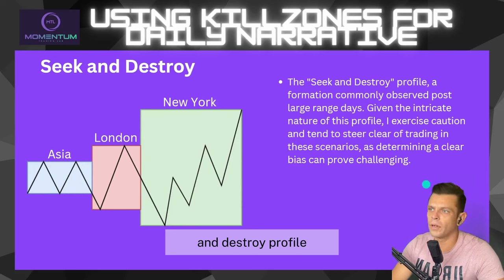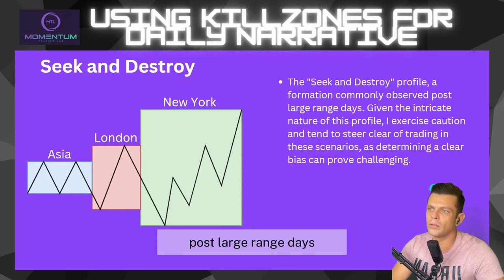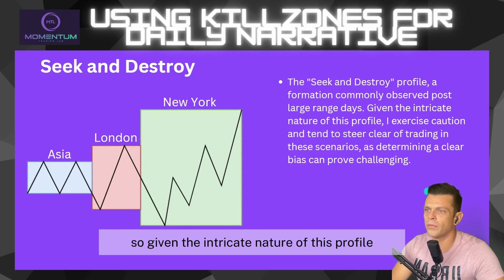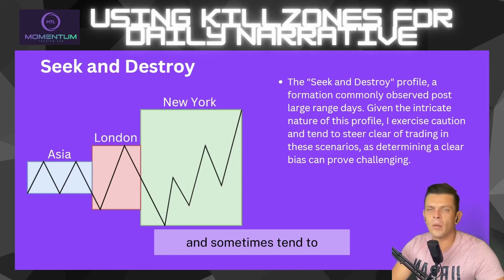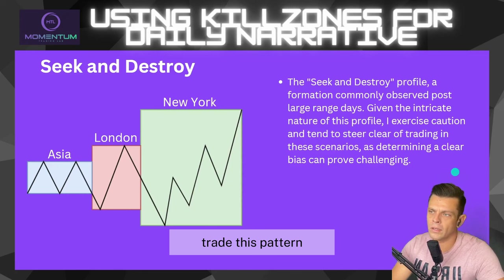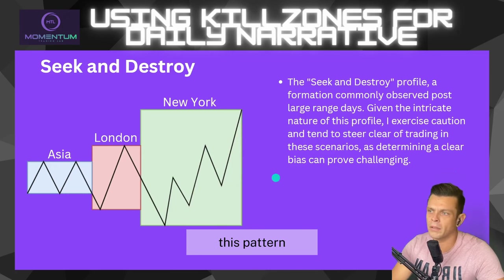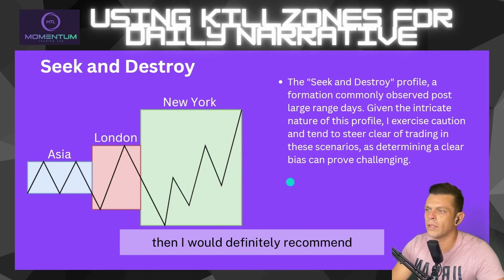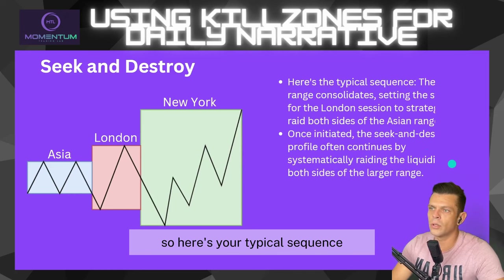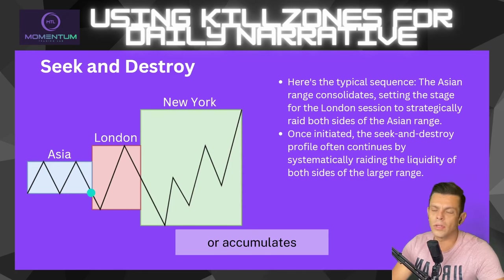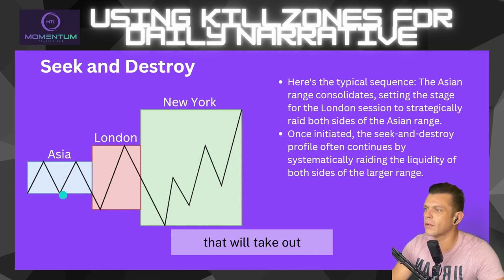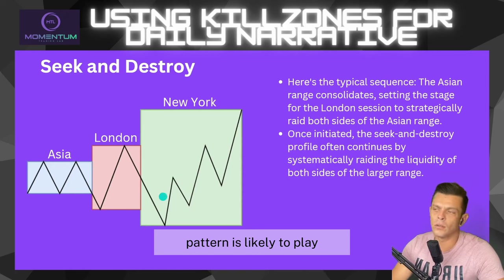The last market profile is the Seek and Destroy profile, normally observed post large-range days. Given its intricate nature I exercise caution and sometimes steer clear of trading these scenarios, as determining a clear bias can be challenging. If you're a beginner or haven't back-tested this pattern, I'd recommend avoiding it. The typical sequence: Asia consolidates, and then during London it raids both sides of the Asia range — taking out both sell-side and buy-side — which signals the larger Seek and Destroy pattern.